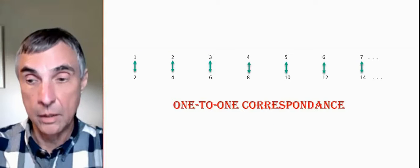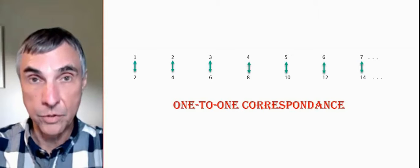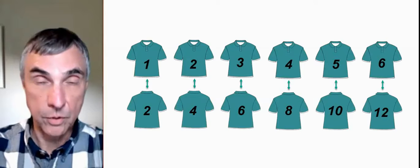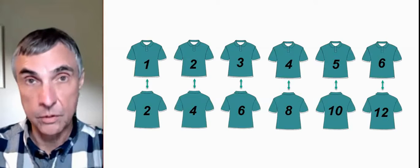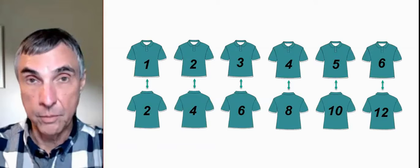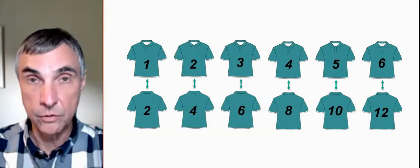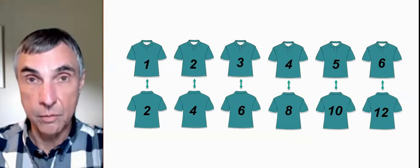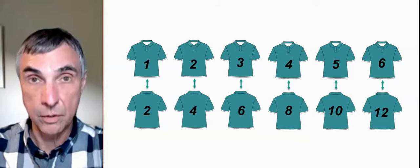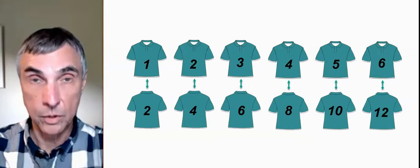And to support the idea that there's the same amount of even numbers as numbers, imagine you had a person and on their chest was the number 1 and on their back was the number 2. You had another person and their chest was the number 2 and on their back was the number 4, etc. So when the people are facing you, you see 1, 2, 3, 4, 5. But if they turn around, you see 2, 4, 6, 8, 10. But we haven't increased the number of persons and we haven't decreased the number of persons. So there must be as many even numbers as there are numbers. This seems strange, but the world is a strange place.